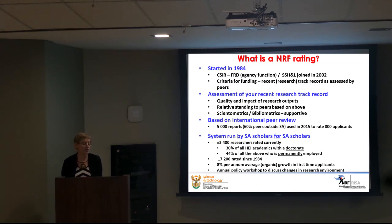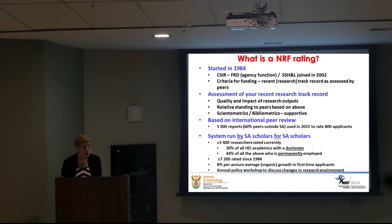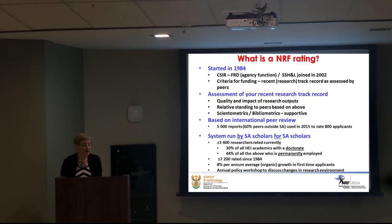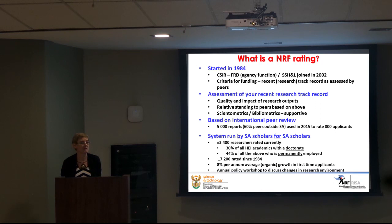Those 3,400 researchers represent, according to HEMIS data, 30% of all higher education institution academics with a doctorate. If we further reduce to those permanently employed, 44% of all those above are rated. Over more than 30 years, 7,200 people have been rated — some more than once. On average, we have 8% organic growth for first-time applicants. Approximately 50% of our applicants are first-time applicants and 50% are re-evaluations.